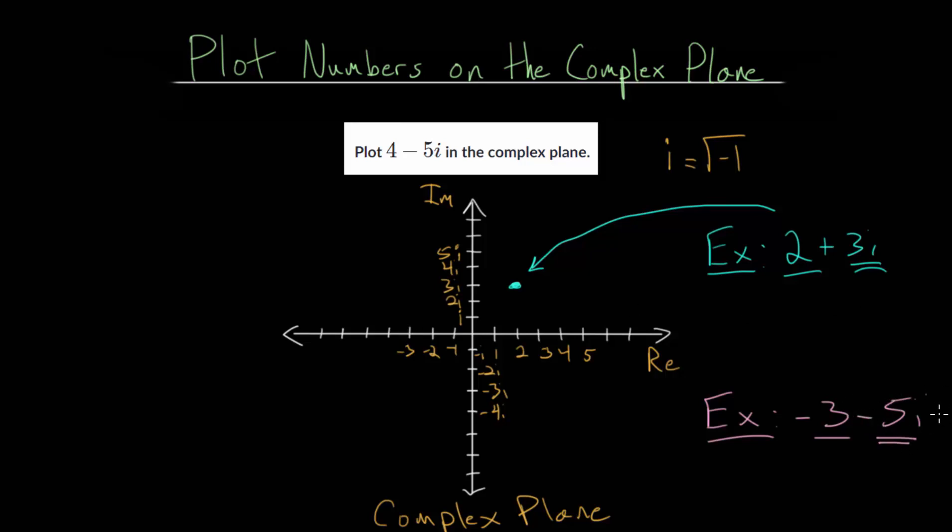we're going to go down 5 in the imaginary direction to minus 5i. So we go minus 3 to the left and then down to minus 5i in the imaginary direction. This complex number is right here on our complex plane.